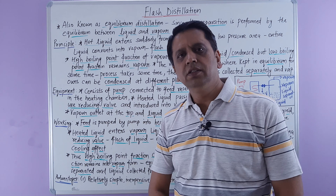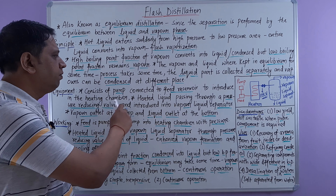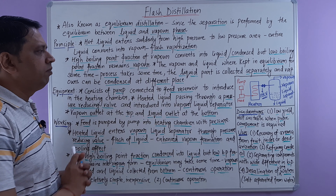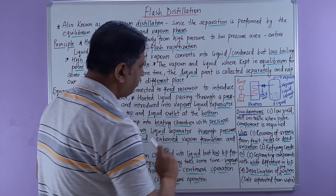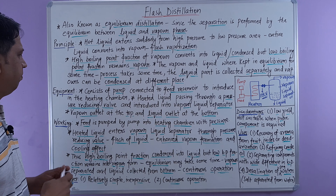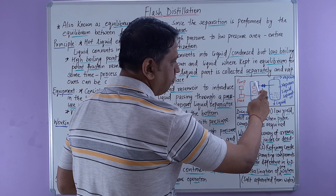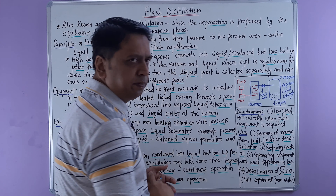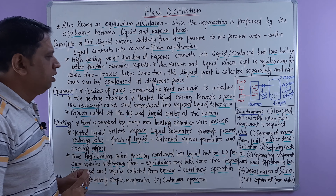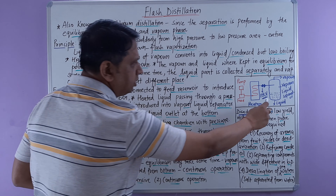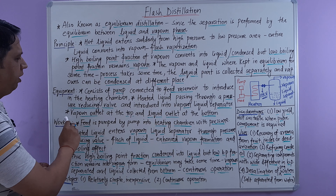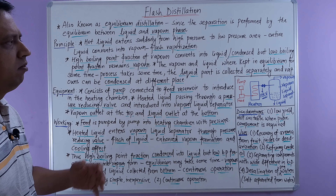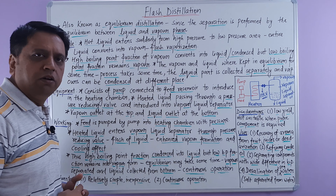Now let us move to the equipment part of flash distillation. The equipment consists of a pump connected to the feed reservoir to introduce the liquid into the heating chamber. The heated liquid then passes through the pressure reducing valve — shown here as PRV — and is introduced into the vapor-liquid separator. The vapor outlet is at the top and the liquid outlet is at the bottom of the vapor-liquid separator.